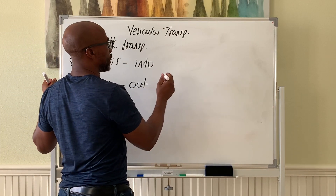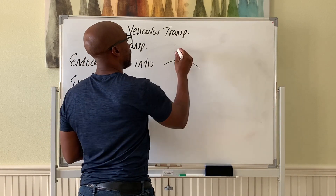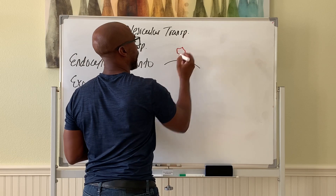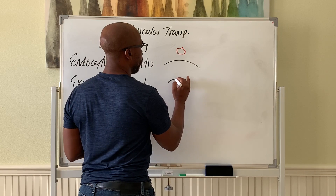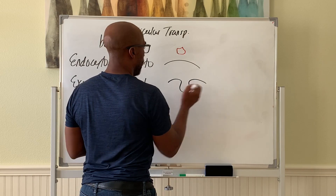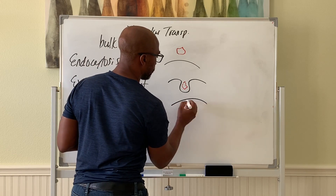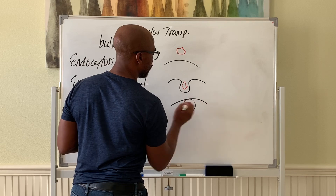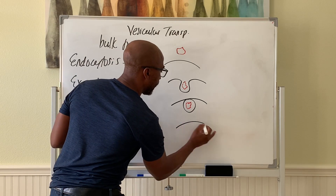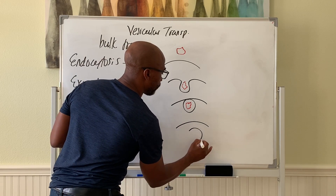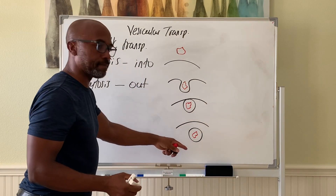First, for endocytosis, here you have a cell membrane with something that you want to bring in. The membrane will then fold around your thing of interest and form a vesicle around it. This will wrap around it and eventually that membrane will bud off inside the cell, and now that thing is inside the cell. That's endocytosis.